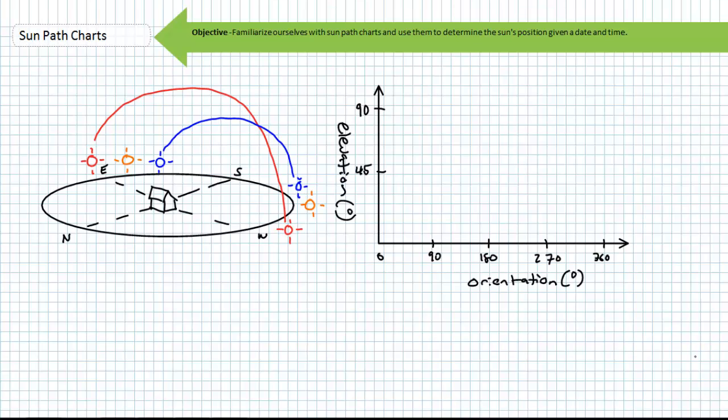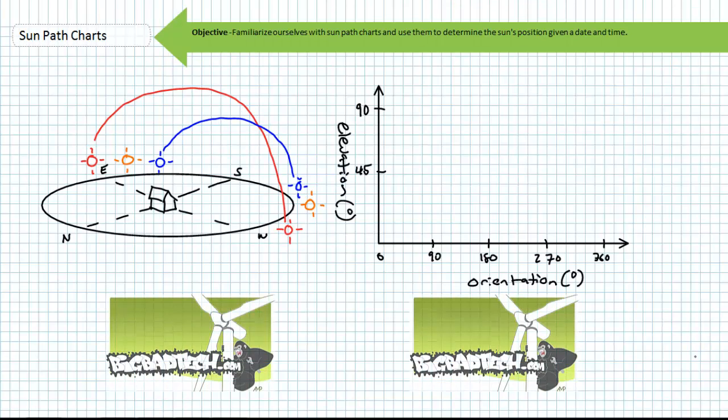Along the way we'll discuss the difference between solar time and standard time. Finally we'll briefly mention the use of sun path charts and shading analysis for a PV array. Given prerequisite understandings of tilted orientation and peak sun hours, the sun path chart lecture should be short and easy. If you don't have these lectures under your belt I strongly recommend you get them there before continuing.